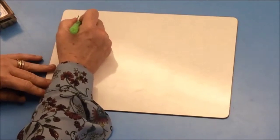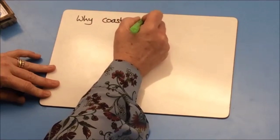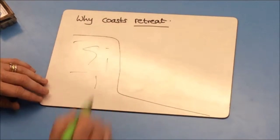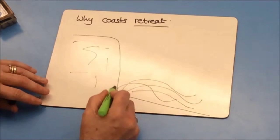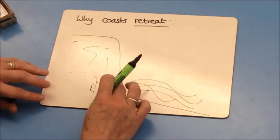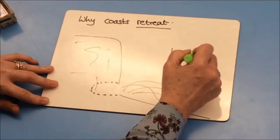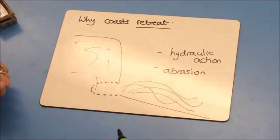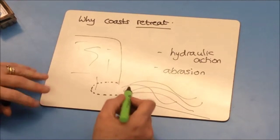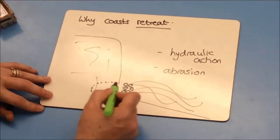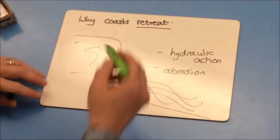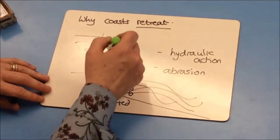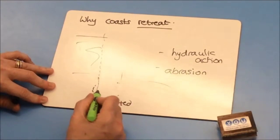The first thing we want to understand is coastal retreat. Here we have our coastline — this is a cliff and here is the sea coming in. The sea will erode and attack the base of the cliff gradually, through hydraulic action — the sheer force of water pounding against the cliff base — and through abrasion, which is all the little pebbles in the sea wearing away the base of the cliff.